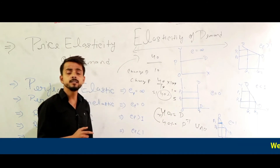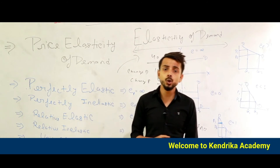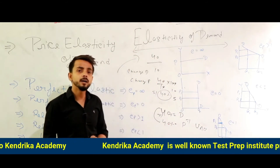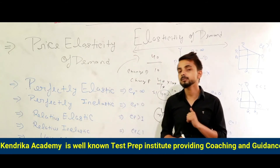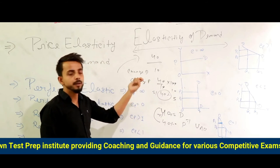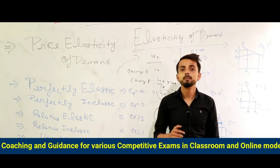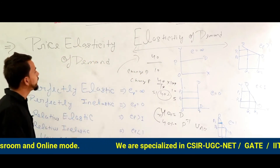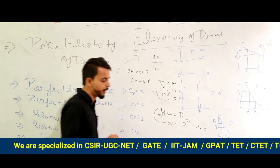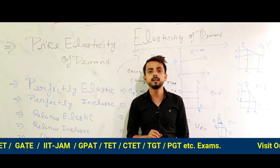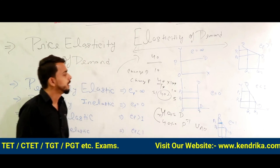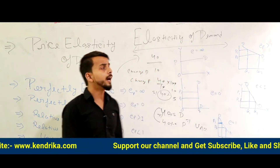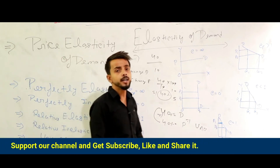Whether ep is one, greater than one, or less than one, elasticity of demand shows the reflection of demand on price — how the price responds to demand, whether the change in price is small or large and how demand will respond. Price elasticity of demand is very important and there are many questions asked in UGC NET, CBSE pattern, and it is one of the most frequent topics from which lots of questions will come.